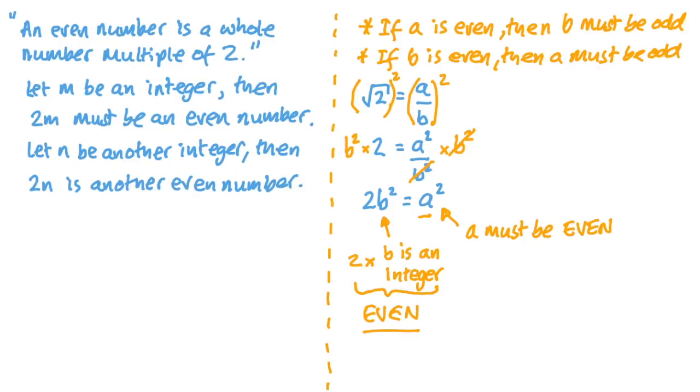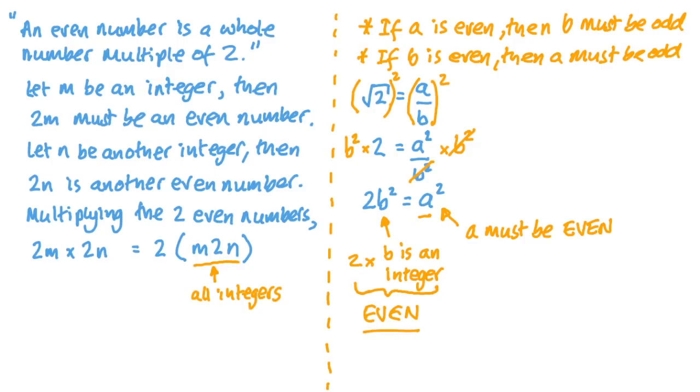Now, we can represent another even number by assigning the letter n to represent another whole number, and then 2n must be another even number. Now, let's multiply our two even numbers together, 2m times 2n, and because multiplication is associative, we can write that as 2 times m times 2 times n. And since 2, m and n are all whole numbers, we know that m times 2 times n will also be a whole number. And that means that 2 times m times 2 times n is 2 times a whole number, which must be an even number. So, if we multiply any two even numbers together, we definitely get a result that's even.